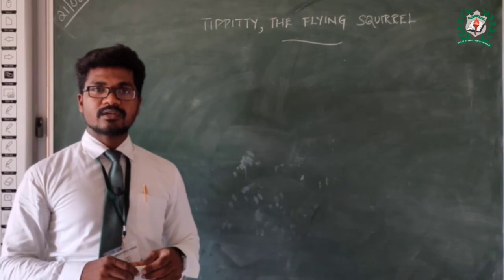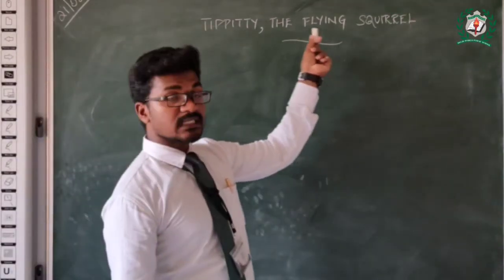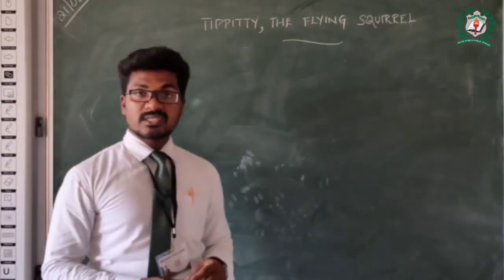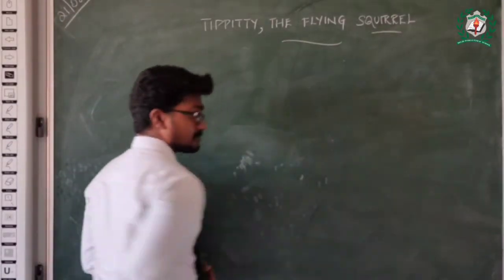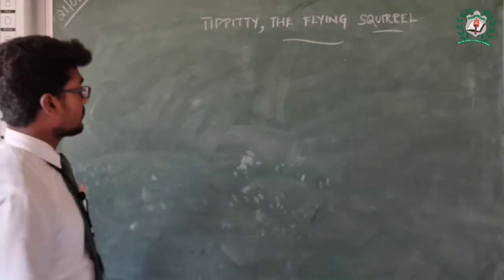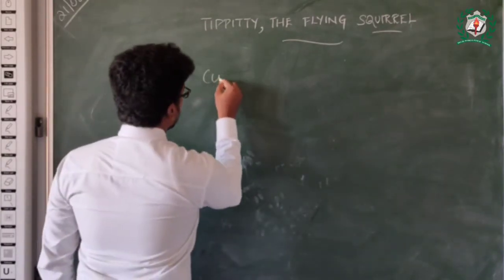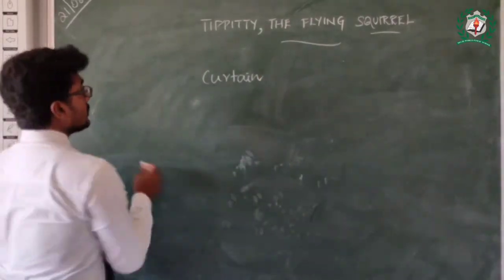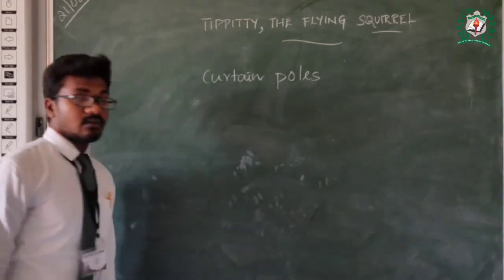Hello students, I welcome you to the part 2 video of Tippity the Flying Squirrel. Today we are going to see this summary about the squirrel. The squirrel was small and it always used to climb the curtain poles of the author's house.